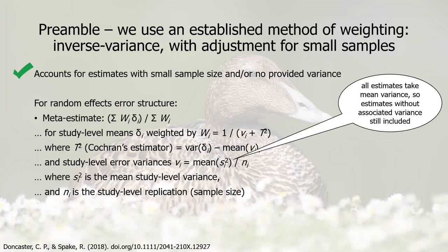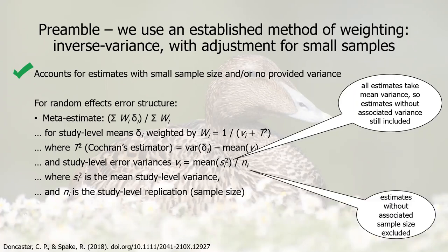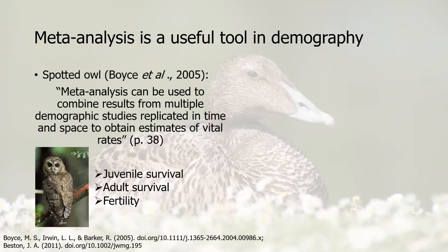To reiterate: taking the mean of the variances is the adjustment for small sample sizes, but what it allows us to do is to include studies which haven't got an associated variance. The meta-variance is then one divided by the sum of the weightings.